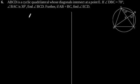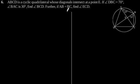Exercise 10.5, Question No. 6. ABCD is a cyclic quadrilateral whose diagonals intersect at a point E. If angle DBC is equal to 70 degrees and angle BAC is 30 degrees, find angle BCD. Further, if AB is equal to BC, find angle ECD.